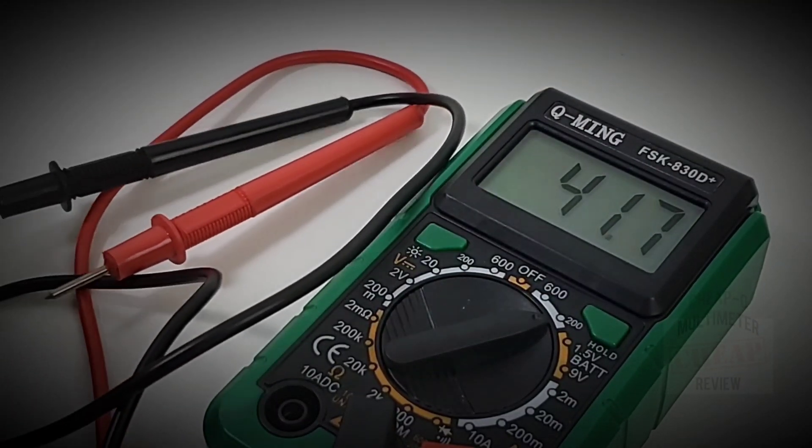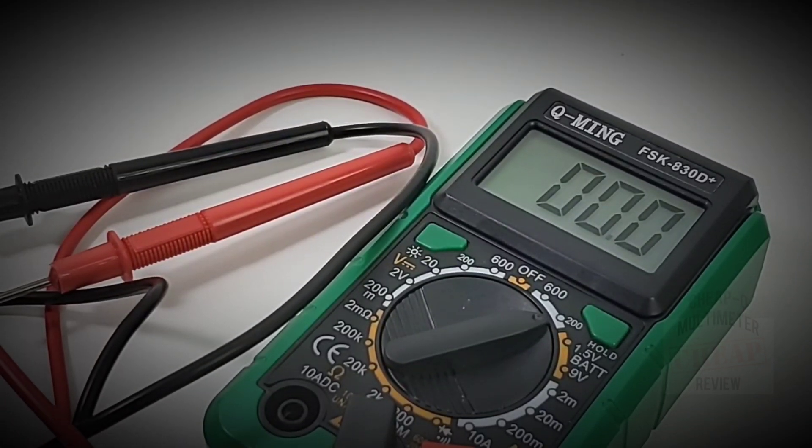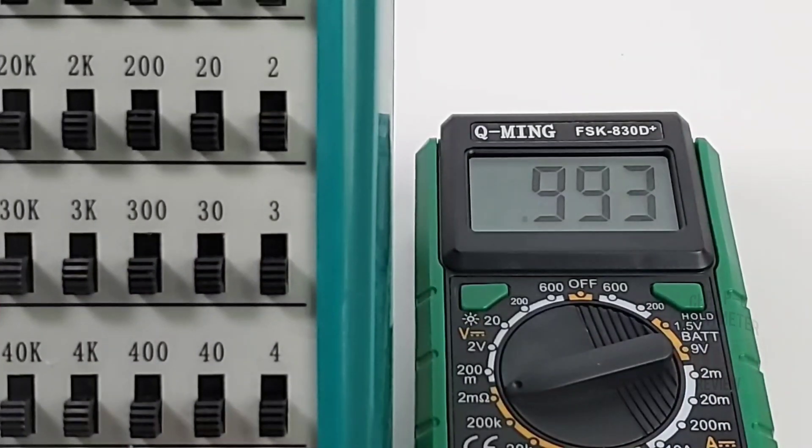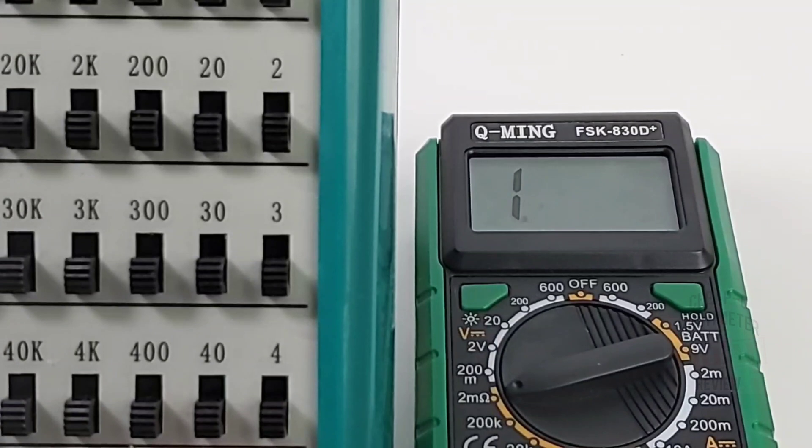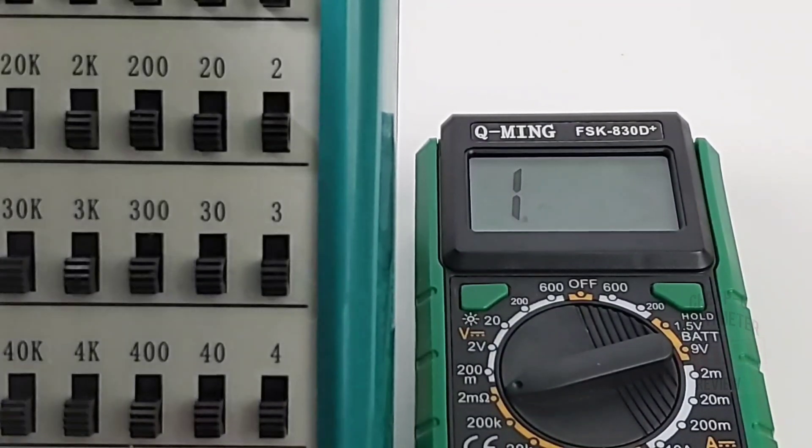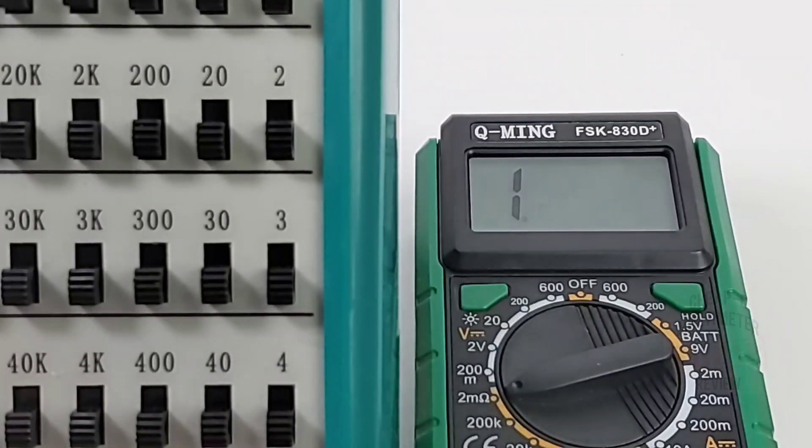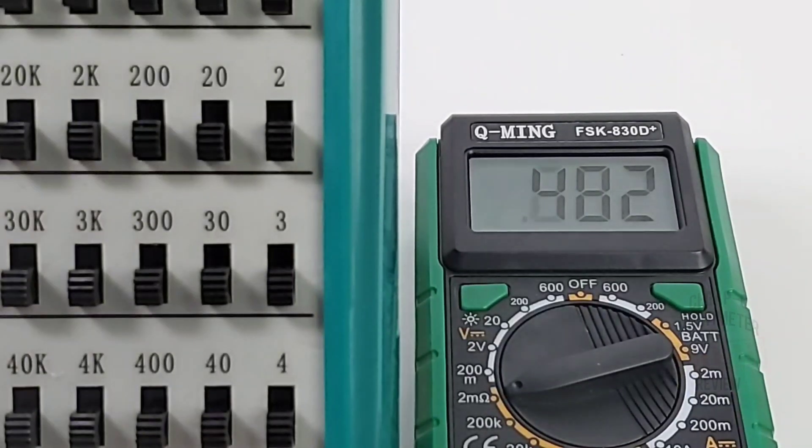Now remember there are no bells and whistles with this meter, no flashlight, no NCV, no live, nothing. Bare bones. In resistance, well, now sitting at one mega ohm, about eight counts off. Let's take it down. Let's try 100k.